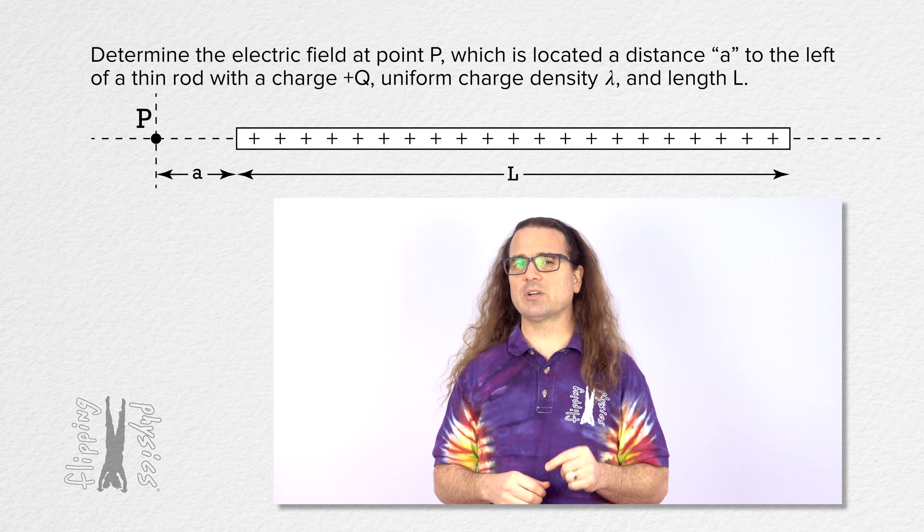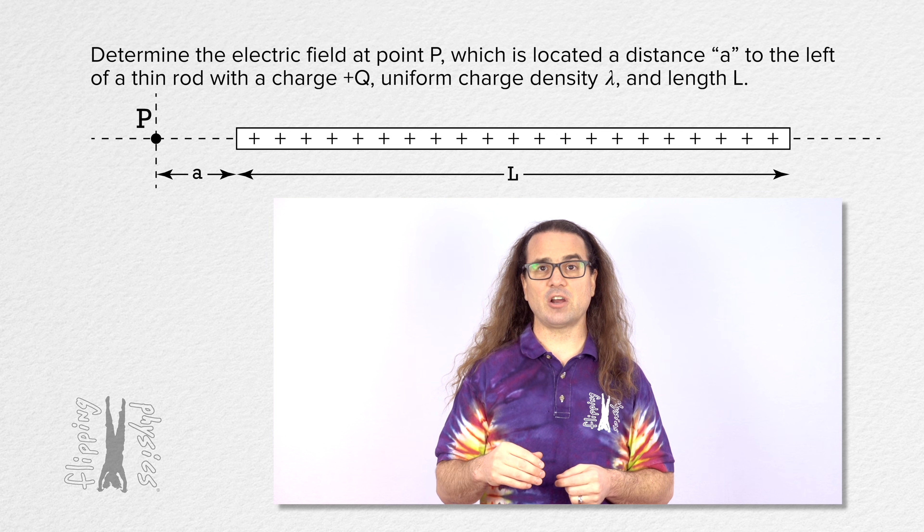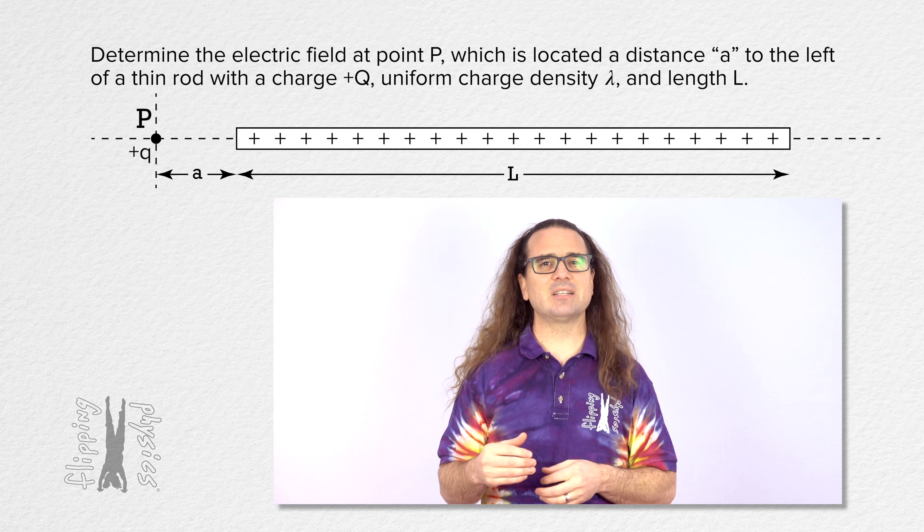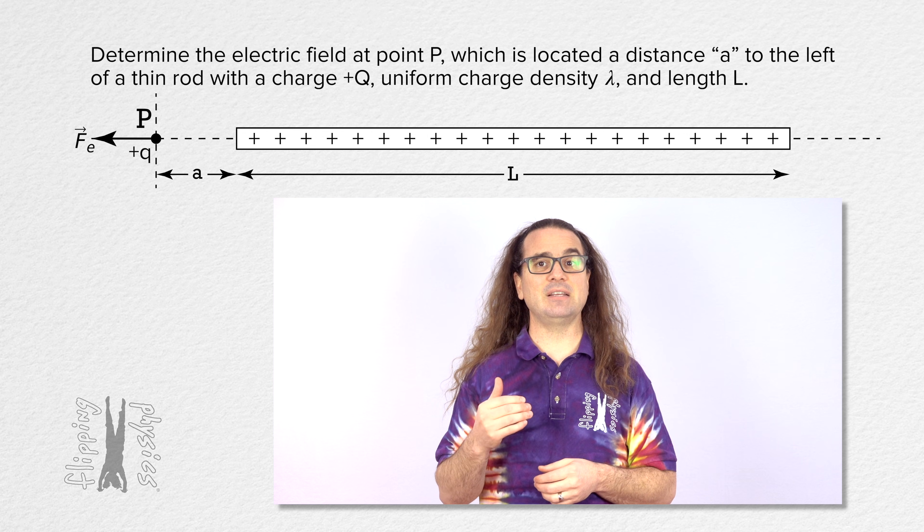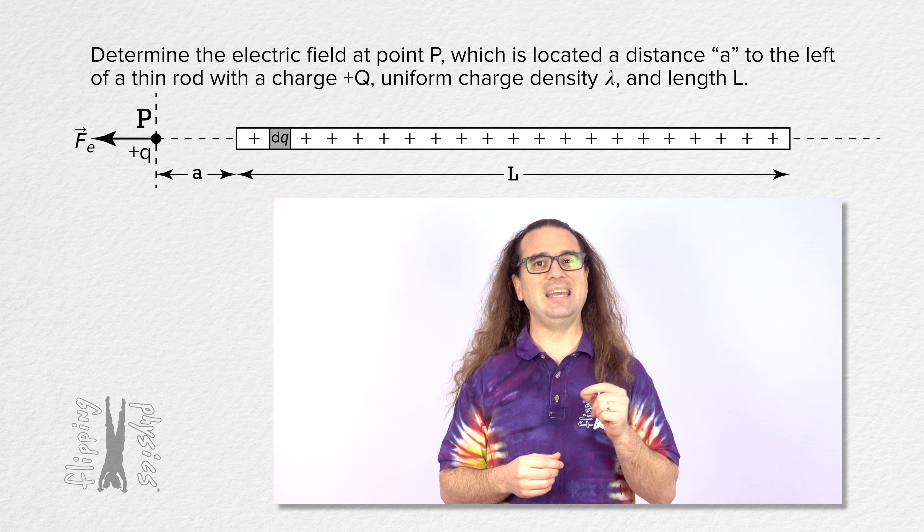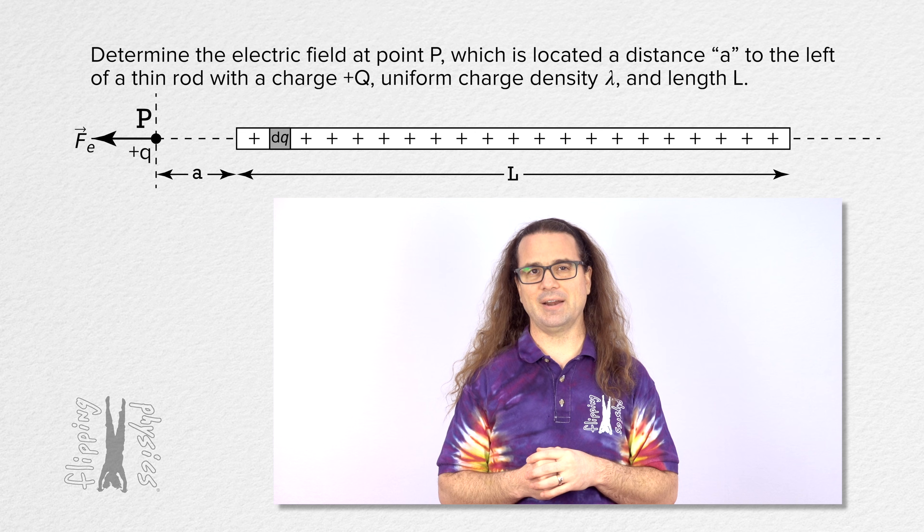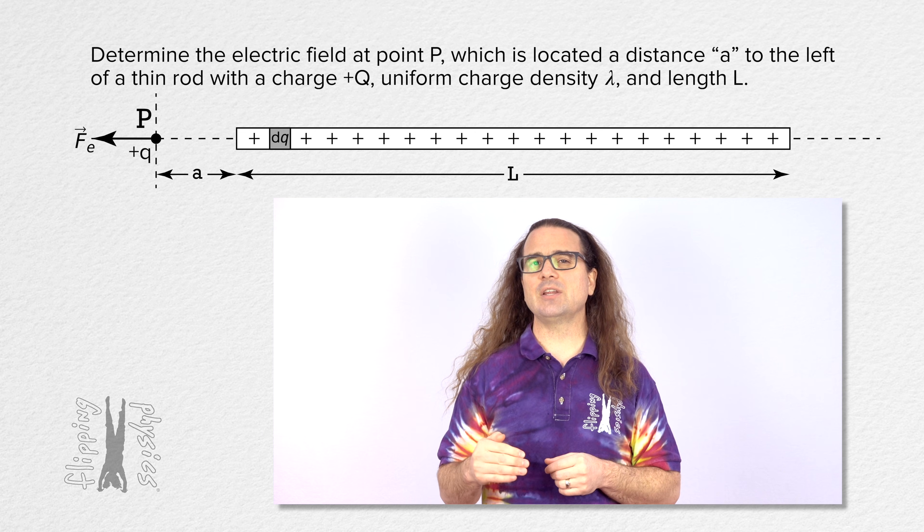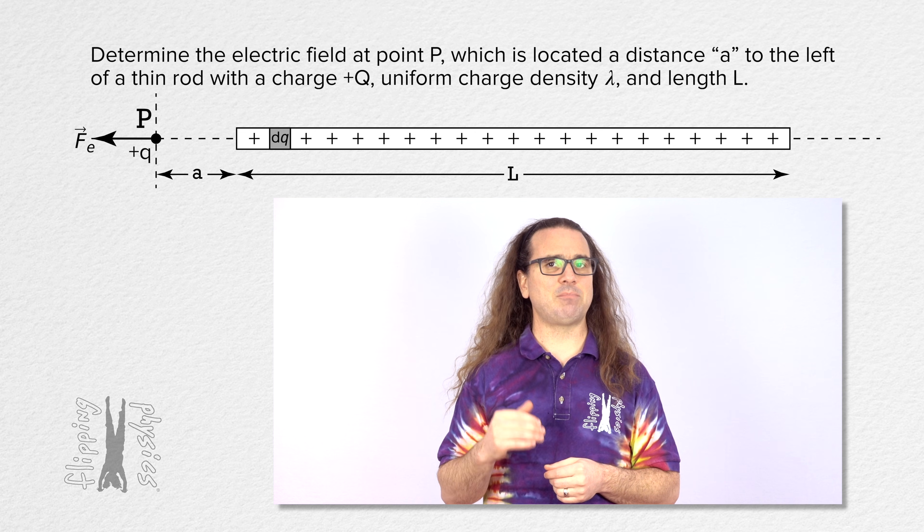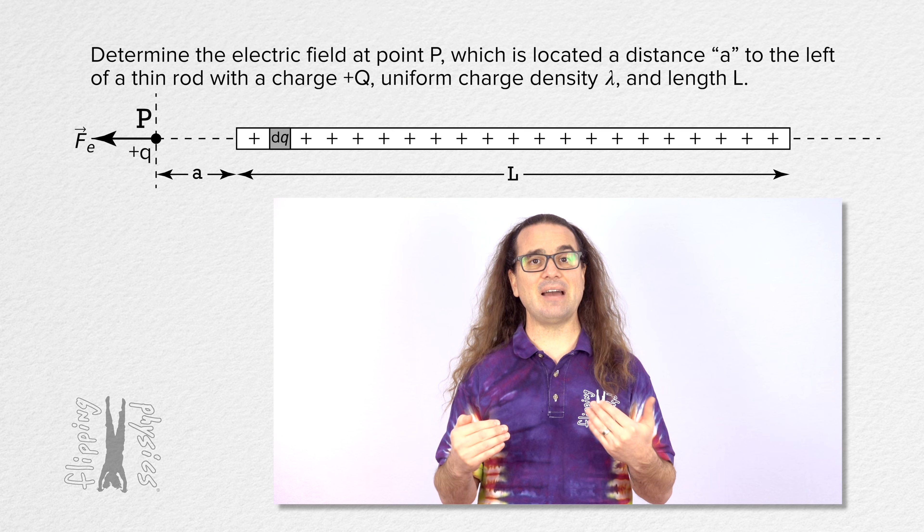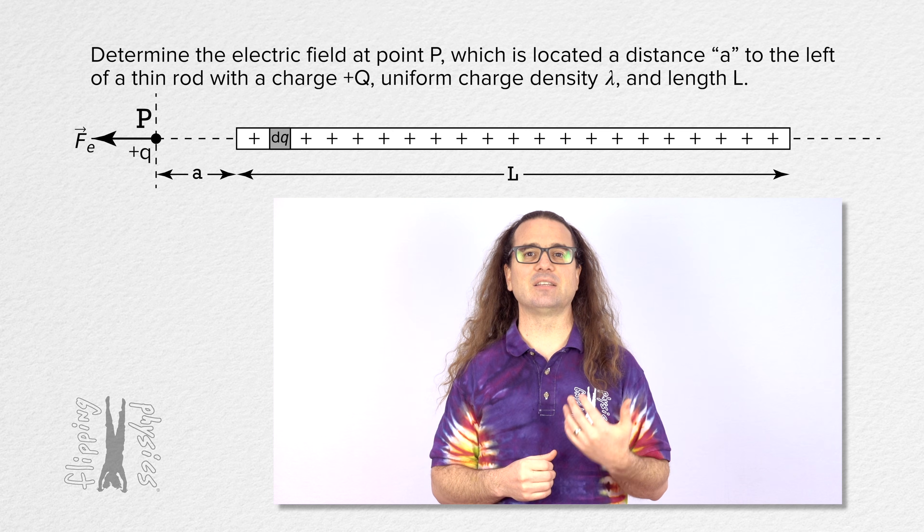Notice that if we were to place a small positive test charge at point P, it would experience a force to the left from every dq or every infinitesimally small part of the wire. Therefore, we already know the direction of the electric field at point P. It will be to the left or in the negative i direction.